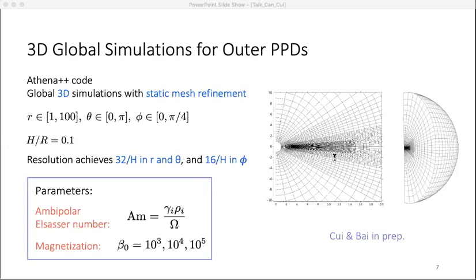Since we are working on the outer part of the disk, ambipolar diffusion is the dominant non-ideal MHD effect, and we parameterize it by ambipolar Elsasser number AM, which is defined by collision frequency of ions to neutrals divided by the orbital frequency. Another parameter in our simulations is the disk magnetization, plasma beta, defined as the ratio of gas pressure to magnetic pressure of the vertical field. The fiducial value is 10 to the 4th, and all of our simulations are evolved up to 3,000 inner orbits.